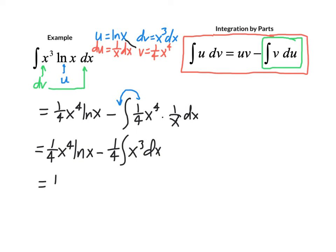So the antiderivative, then, final form, is 1 fourth x to the fourth natural log x minus 1 sixteenth times x to the fourth, and then we remember to put our plus c here at the end, and that's our integral.